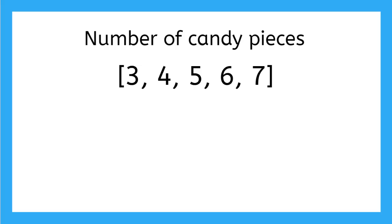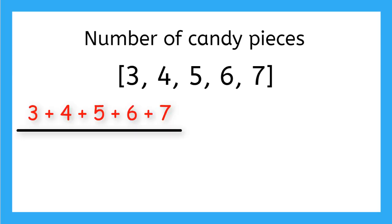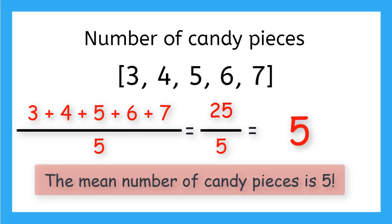So first we write the sum of our data in the numerator, and we divide by the number of data values. So on top we have three plus four plus five plus six plus seven. And on the bottom we have five because we have five numbers in our data set. So in the numerator, our sum comes out to be 25 and 25 divided by five is five. So we can say the mean or the average is five.